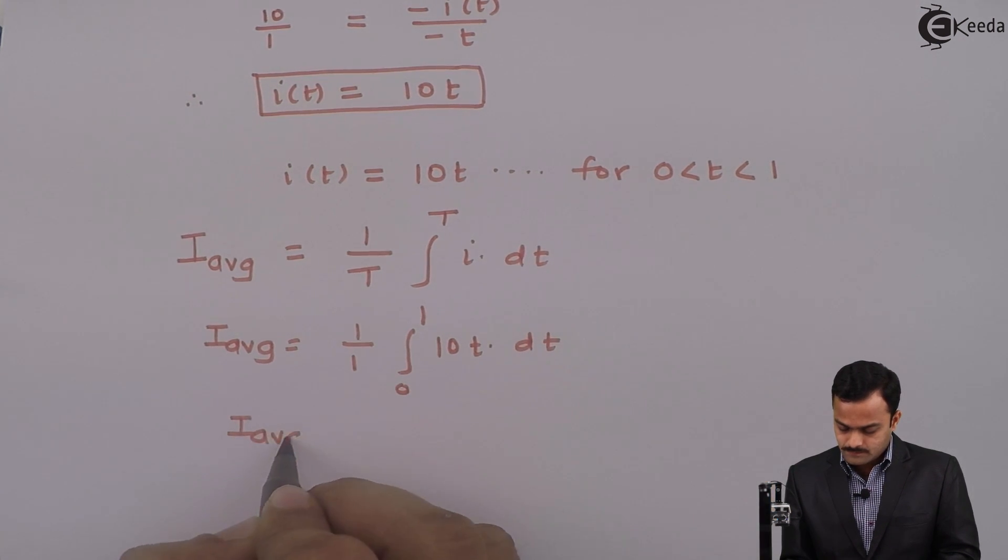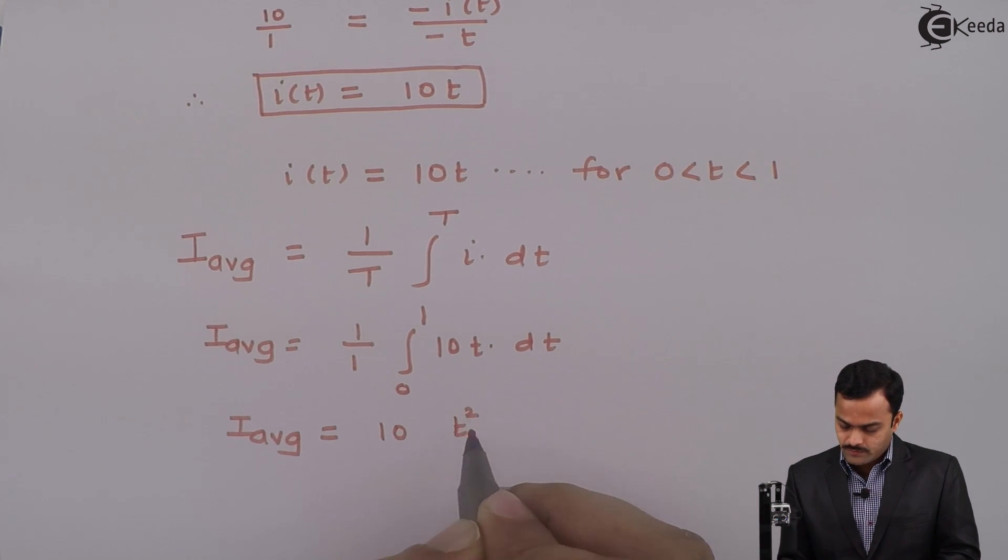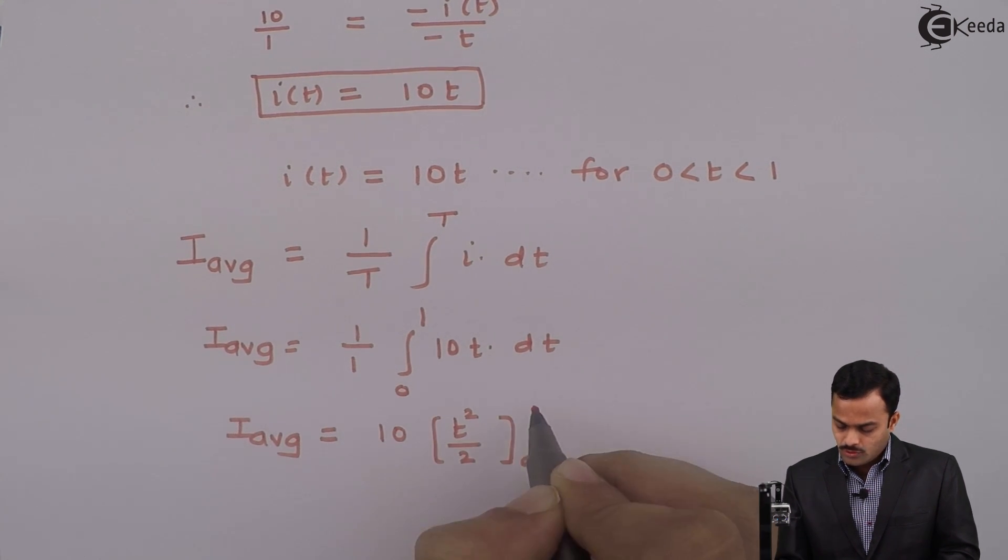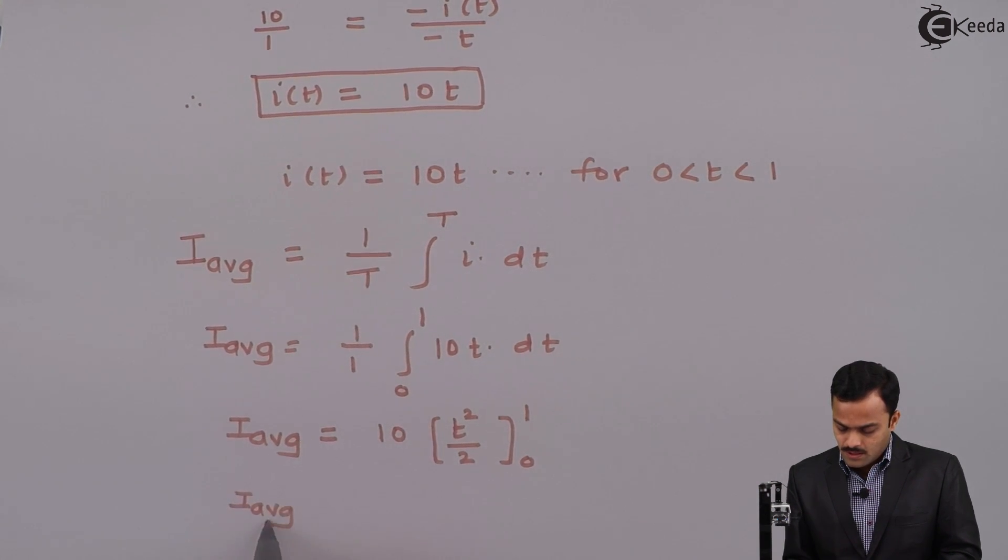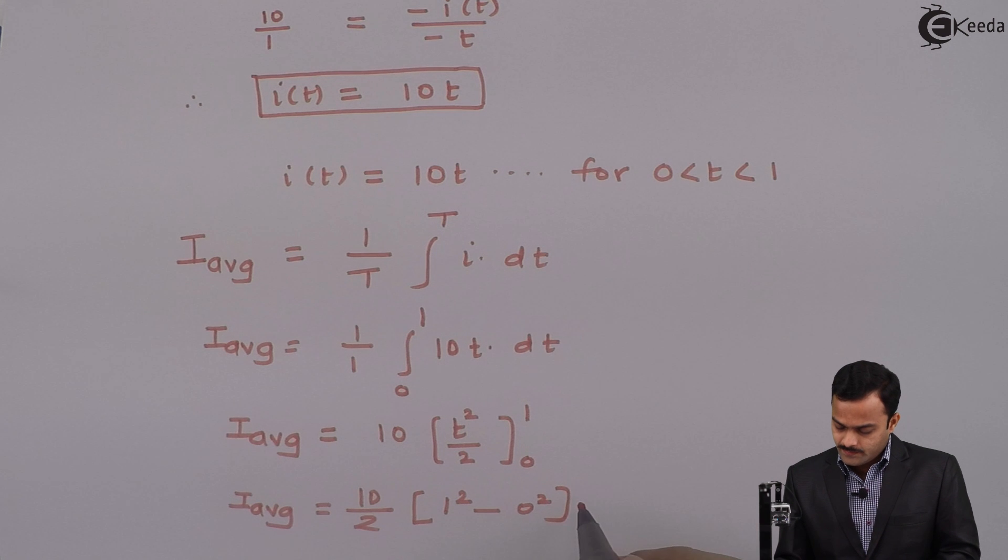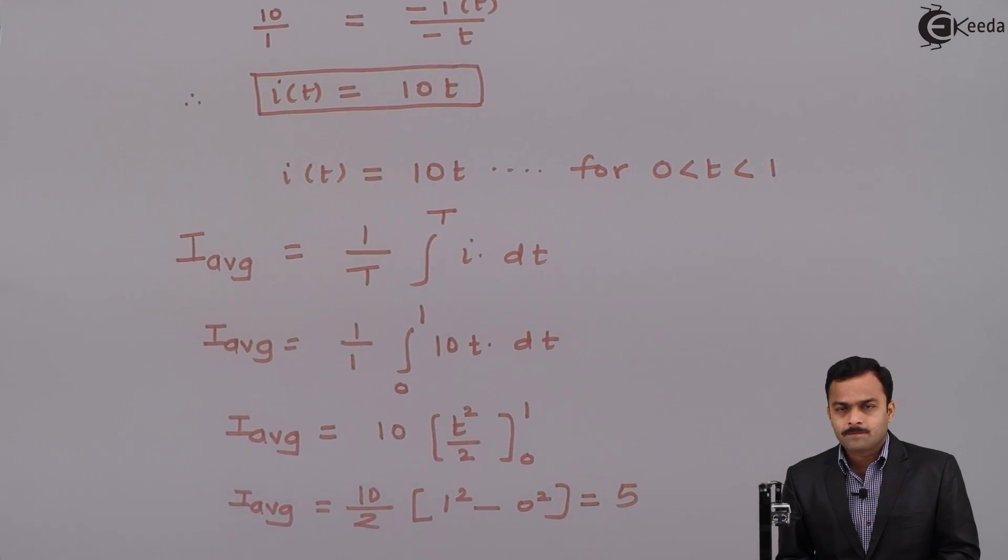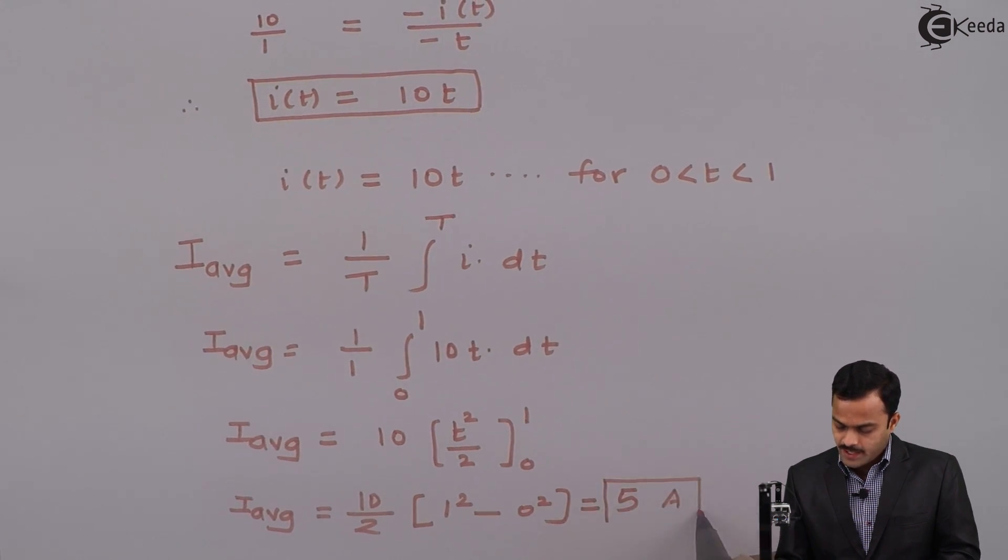I_average equals 10 taken out of integration. Integration of t is t²/2. Let us apply the limits. Lower limit is 0, upper limit is 1. If I solve, I will get average value as 10 divided by 2 in bracket (1² - 0²). Ultimately, it is 5 ampere.